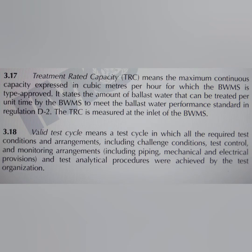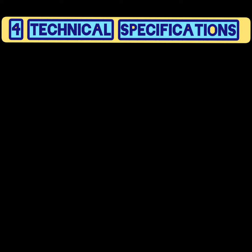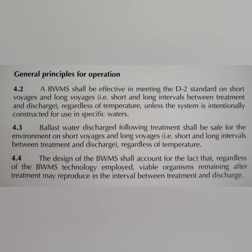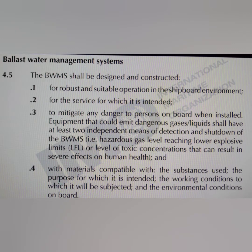Treatment rated capacity is the next definition. Based on the ship's design, there will be a certain amount of water that your ballast water treatment system can treat in a certain amount of time. That amount expressed in cubic meters per hour is your treatment rated capacity. Chapter 4 is technical specification, which talks about the general technical requirements a ballast water management system shall meet in order to obtain type approval, covering general principles for operation and system design and construction — basically providing guidelines for the manufacturer.